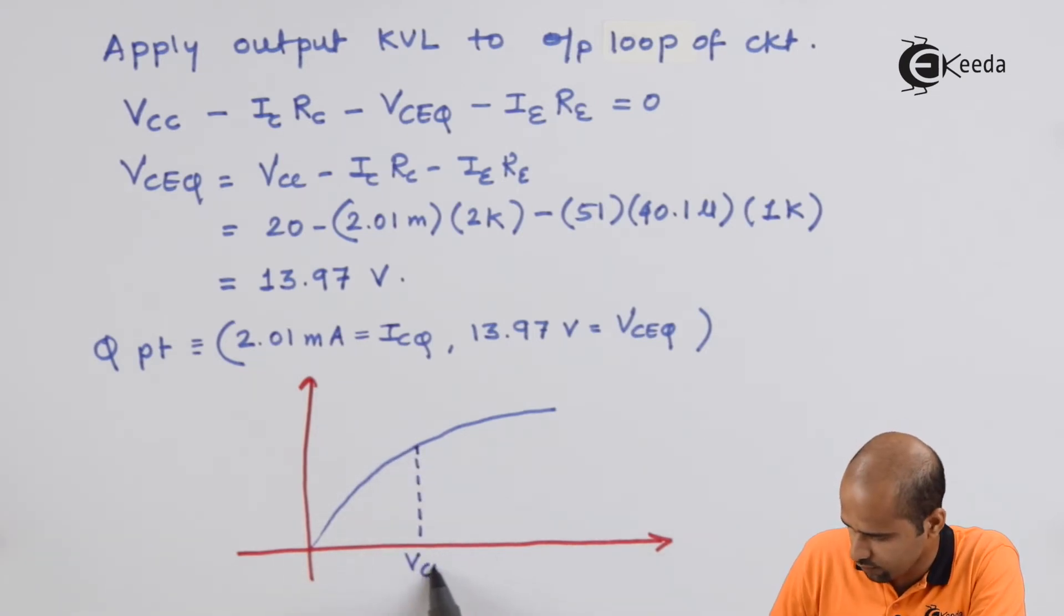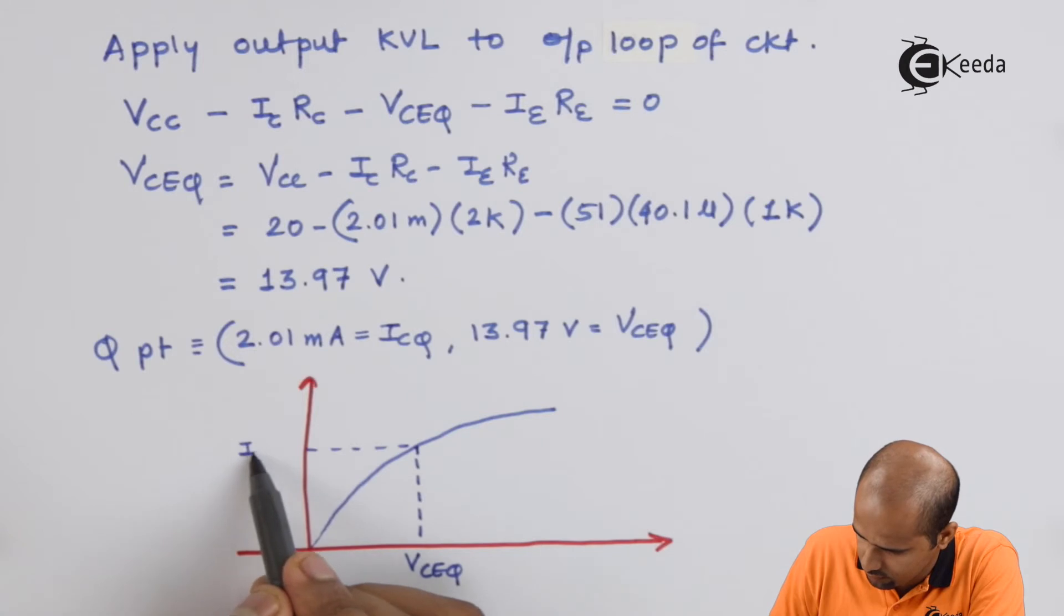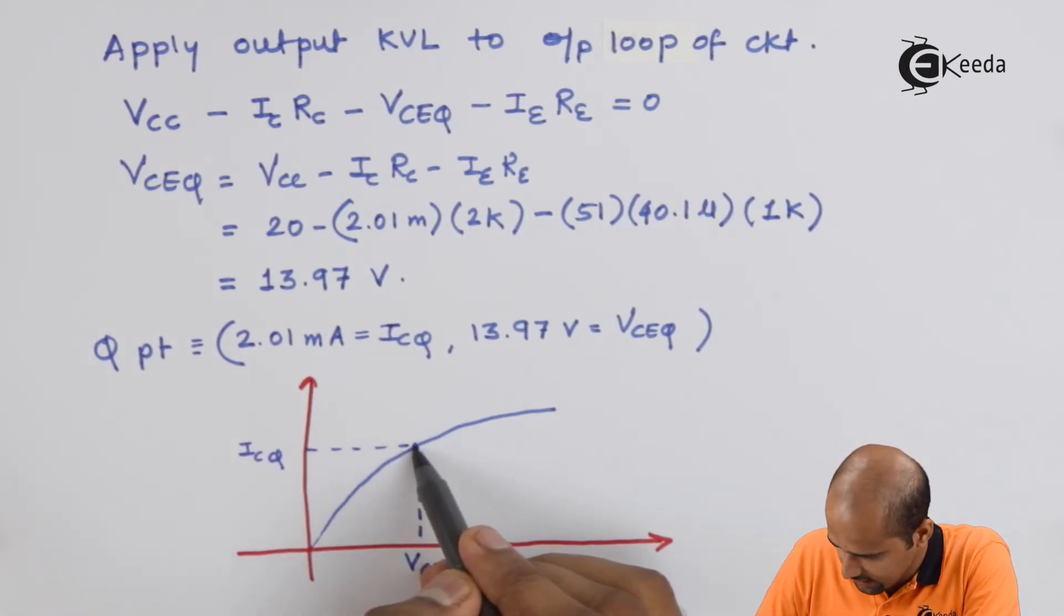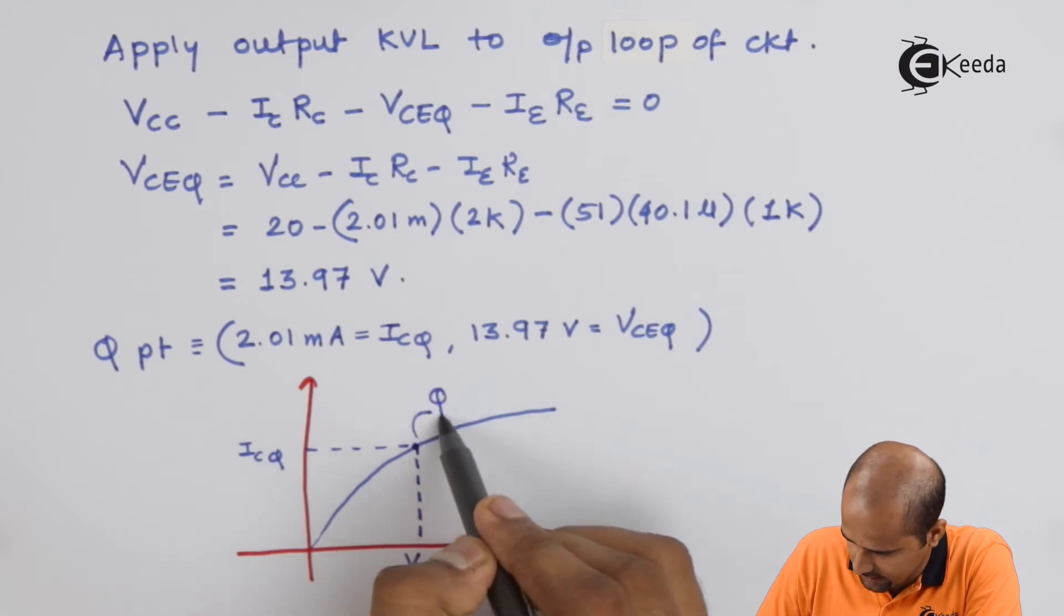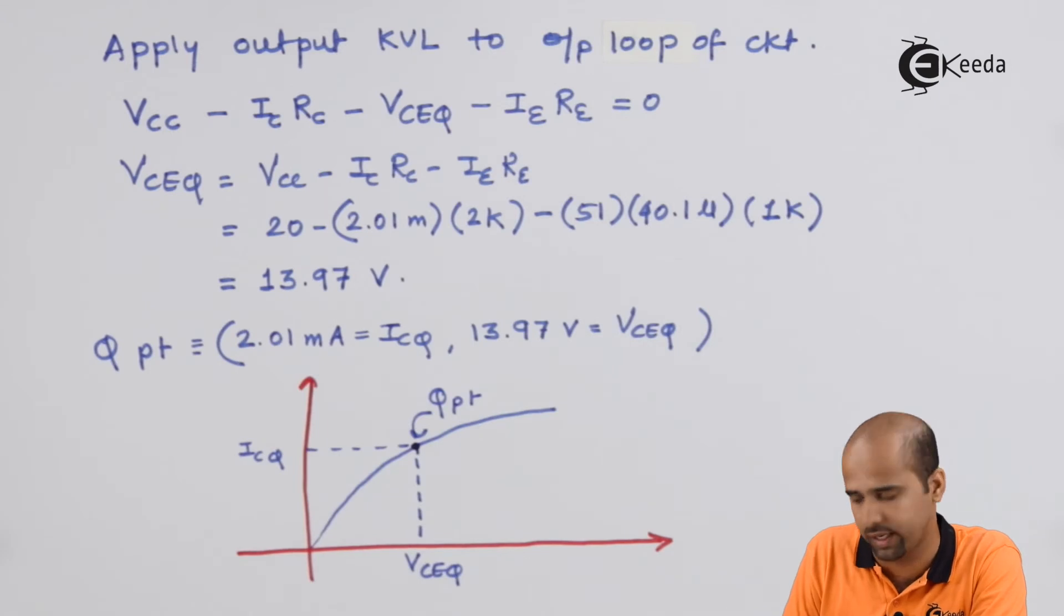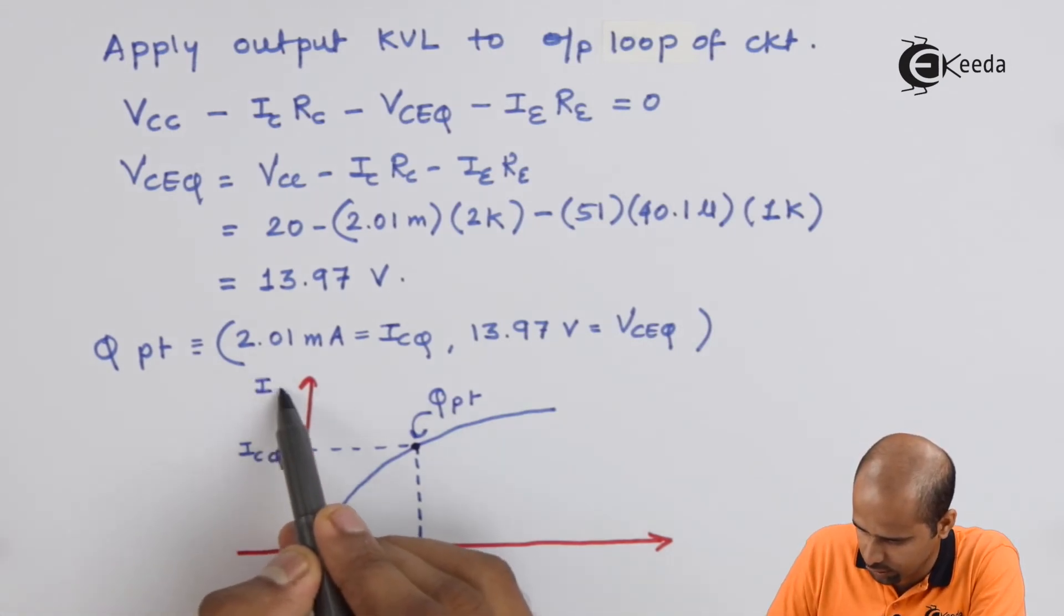This is your VCEQ. And this is your ICQ. And this is called as Q point, coincident point for your operating condition. So we have completed your first part of the numerical. And the second part we will do in the next slide.